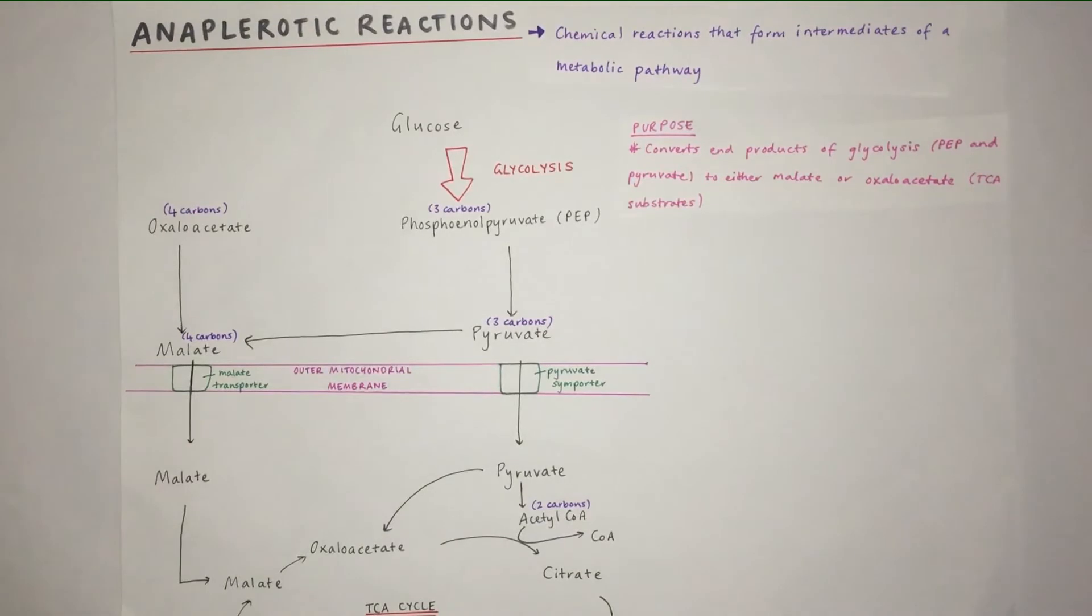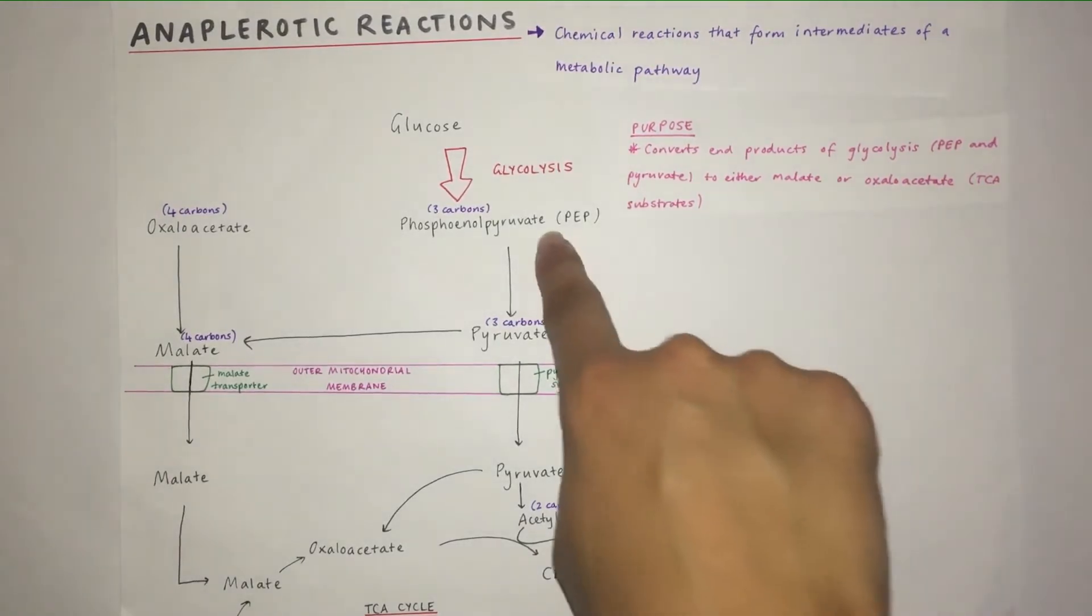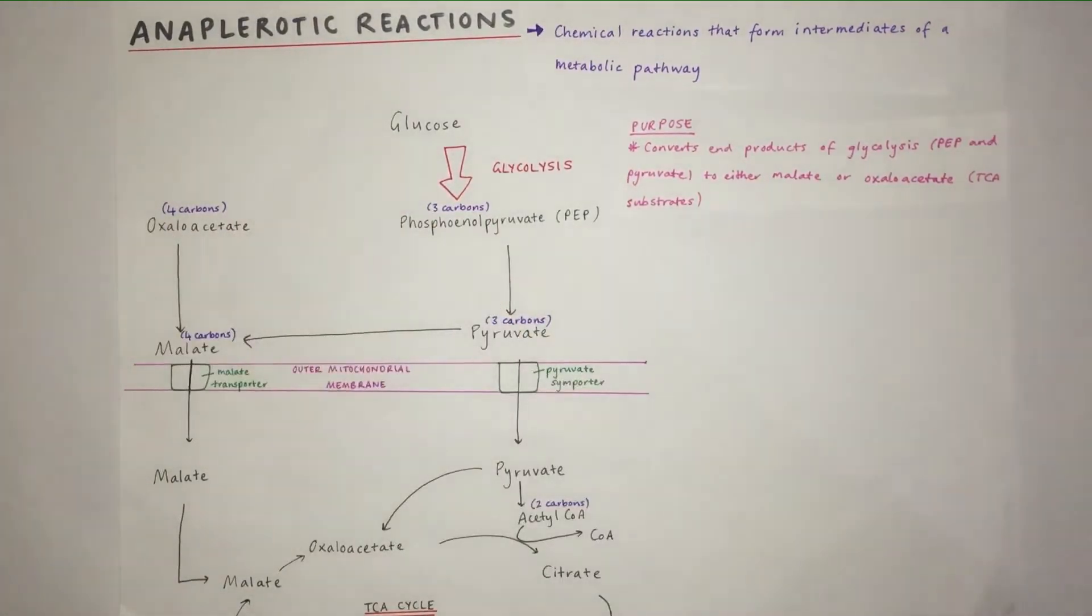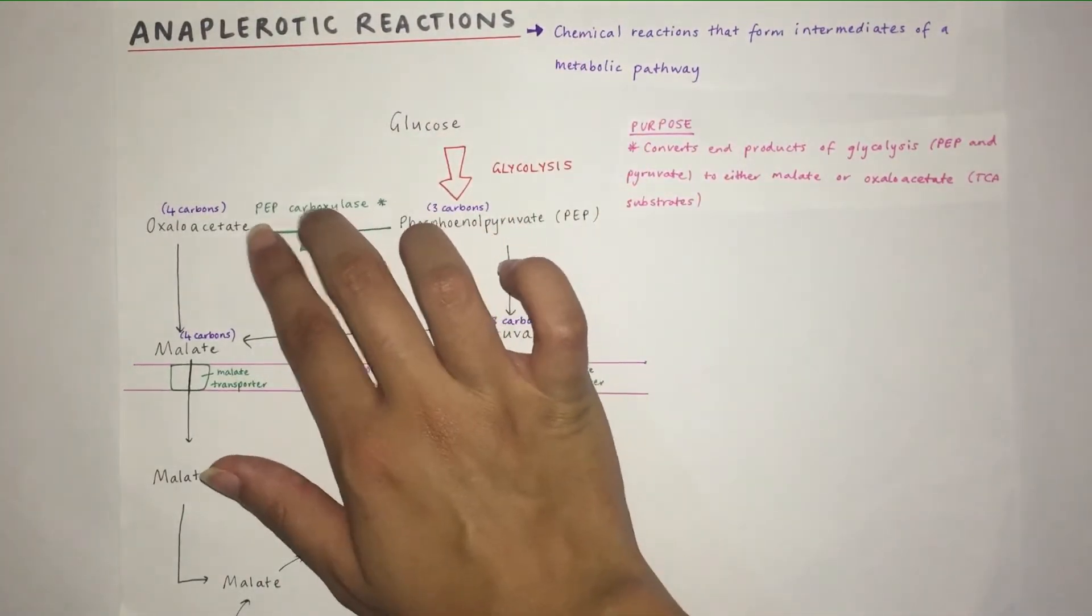It feeds into the TCA cycle. Now that we've defined anaplerotic reactions, let's get into the reactions that are called anaplerotic reactions. First of all, we've got PEP to oxaloacetate. In some textbooks you might see this reaction.